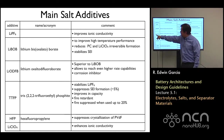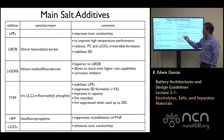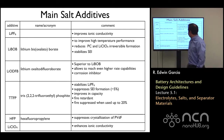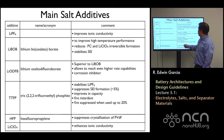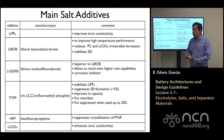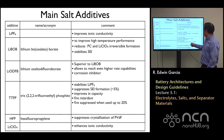A variation from LiBOB is LiODFB, which, even though it's superior to LiBOB, allows reaching even higher rate capacities. And one important thing — it's a corrosion inhibitor, because you don't want your back contacts to be eaten away. Then you have TTFP, which stabilizes LiPF6, suppresses SEI formation by around 5%, improves capacity because of SEI stabilization, and becomes a fire retardant. That's important if you have reached that limit — either because a dendrite has formed or gases have accumulated in your cell — because it suppresses the fire when used up to 20%.